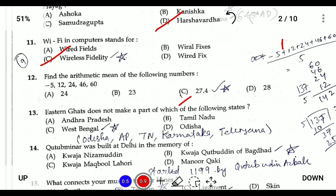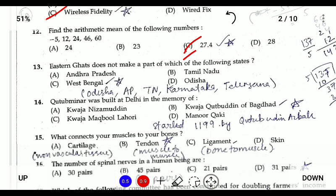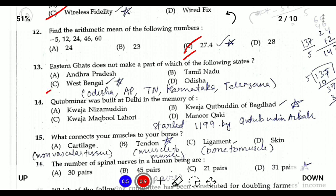Question thirteen: which of the following states does the Eastern Ghats not pass through? The Eastern Ghats pass through Odisha, Andhra Pradesh, Tamil Nadu, Karnataka, and Telangana. The state that the Eastern Ghats do not pass through is West Bengal.